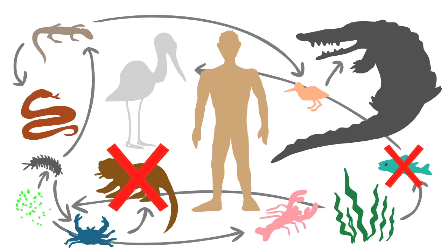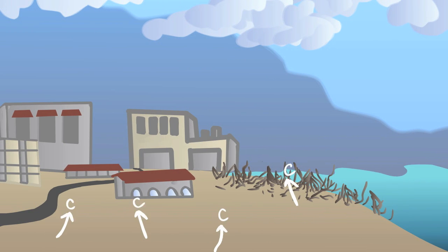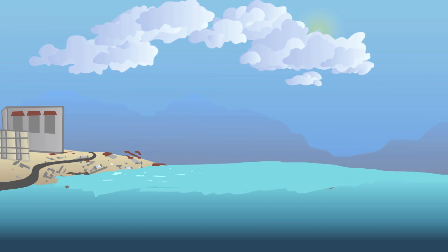A world without mangroves would suffer reduced biodiversity, eroded coastlines, decreased fish stocks, accelerated climate change from carbon release, and severe damage to coastal infrastructure as well as communities.